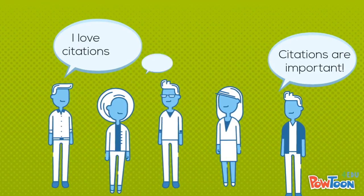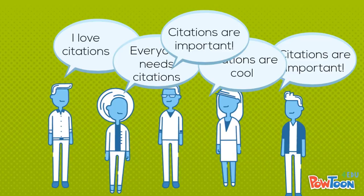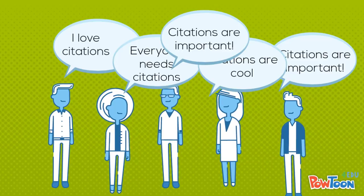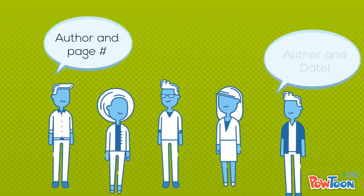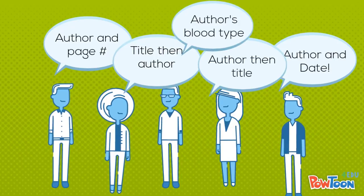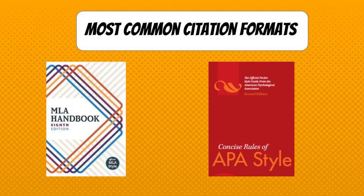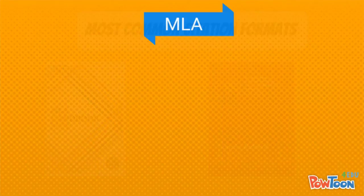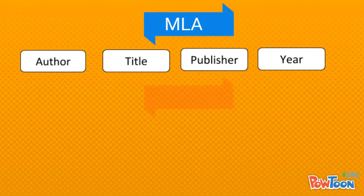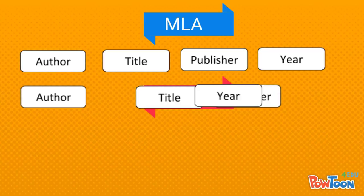Just about everyone in academia can agree that citations are important, but what they can't agree on is how they should be formatted and what they should include, which is why there are different citation styles. The two main citation formats you'll use in college are MLA and APA. When it comes to bibliographic information, both styles require the same basic information, just in a different order.